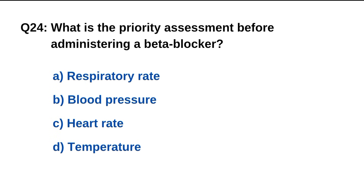Question number 24. What is the priority assessment before administering a beta blocker? The right option is C: Heart rate.